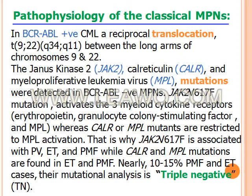What is the pathophysiology of chronic myeloproliferative neoplasms? In Philadelphia-positive chronic myeloid leukemia, a reciprocal translocation between the long arms of chromosomes 9 and 22 occurs. JAK2 kinase, calreticulin, and myeloproliferative leukemia virus (MPL) mutations were detected in Philadelphia-negative myeloproliferative neoplasms.